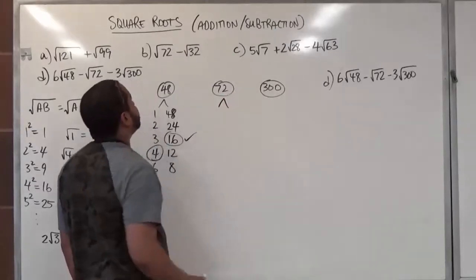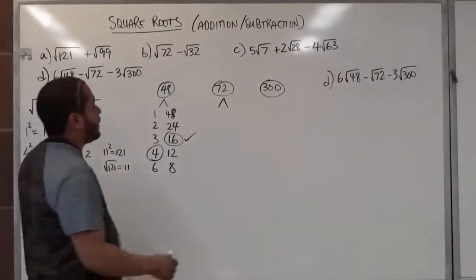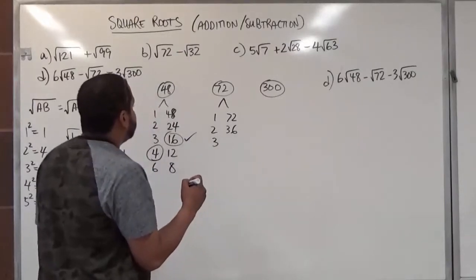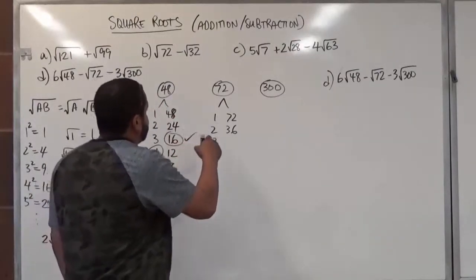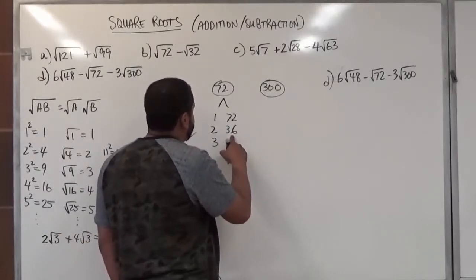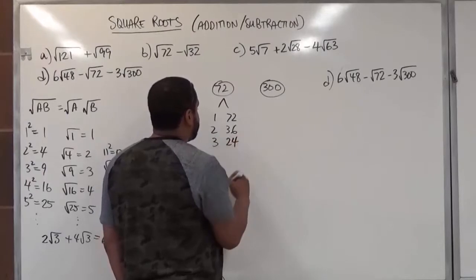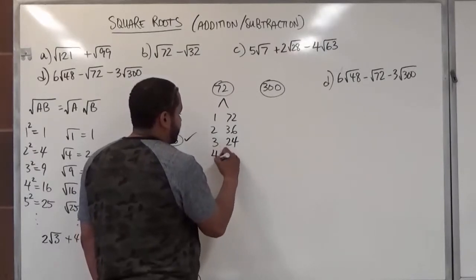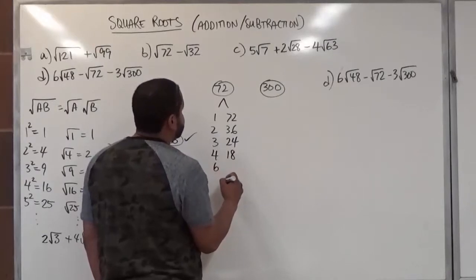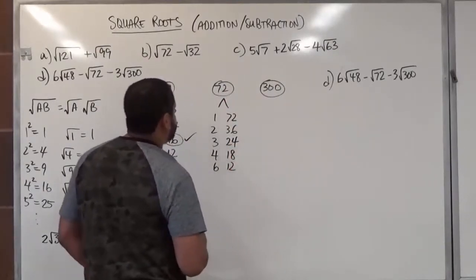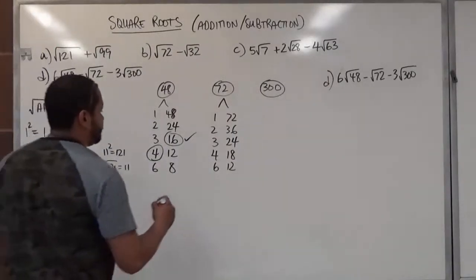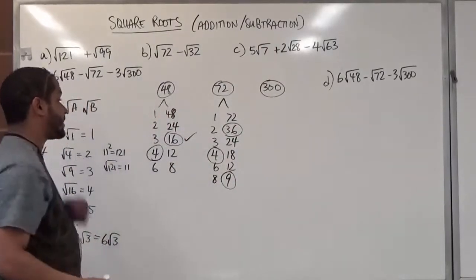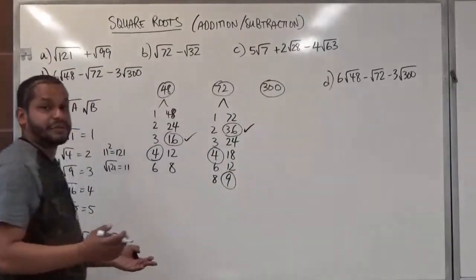Moving on to 72, which we already factored in Part B. The factor pairs include 1 and 72, 2 and 36, 3 and 24, 4 and 18, 6 and 12, and 8 and 9. The perfect squares are 4, 9, and 36. The largest is 36, so we use the square root of 36 times the square root of 2.